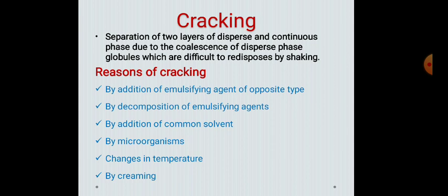Third, by addition of a common solvent — when a solvent is added to an emulsion which is miscible with the dispersed phase, the emulsifying agent, and the continuous phase, there is formation of one phase or a clear solution, leading to cracking. For example, addition of alcohol to turpentine liniment leads to formation of a clear solution because turpentine oil, soft soap, and water are soluble in alcohol. Fourth, by microorganisms — if emulsions are not stored properly, they may develop bacteria and mold growth, which may lead to destruction of the emulsifying agent and cause cracking.